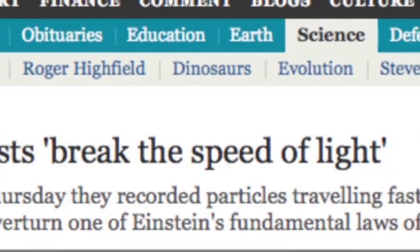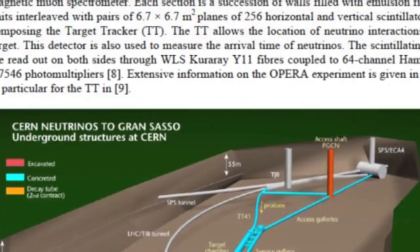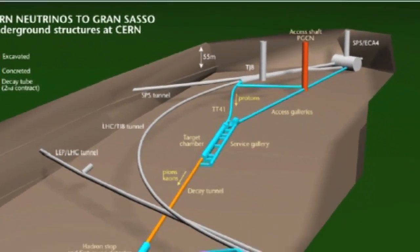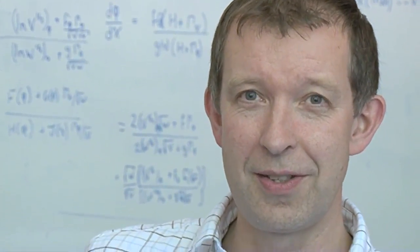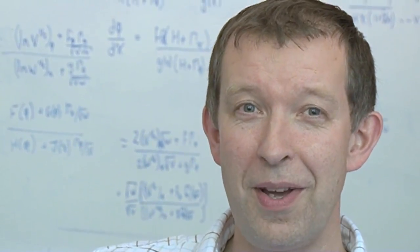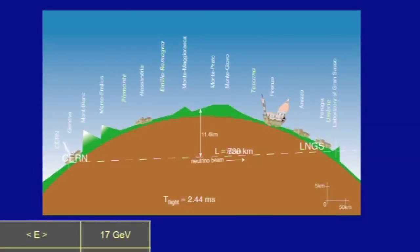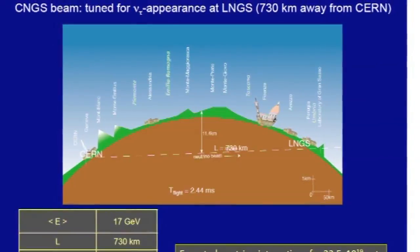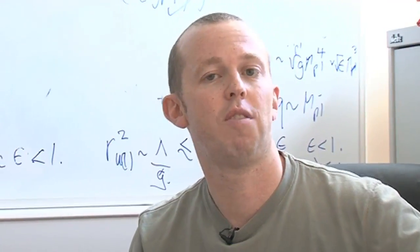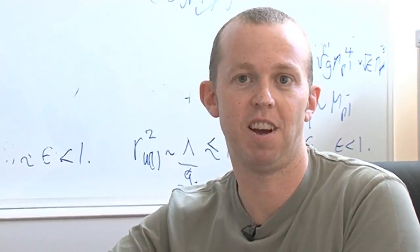The terrible jokes are coming because of this recent announcement from this group of experimentalists based in Italy at the Gran Sasso Laboratory, who have been doing an experiment for the past three years, where they are looking at neutrinos flying from being produced in CERN, near Geneva, flying through the Italian Alps and landing, going straight through the detectors at Gran Sasso, but some of them are interacting with the detectors. So they've got a good idea of what time that neutrino left CERN, and of course they detect at what time it arrived in Gran Sasso.